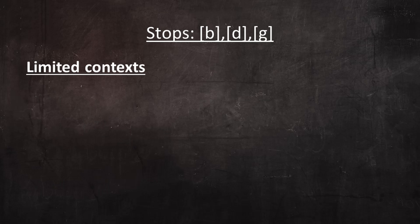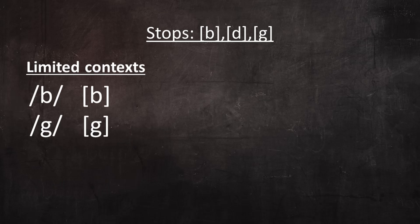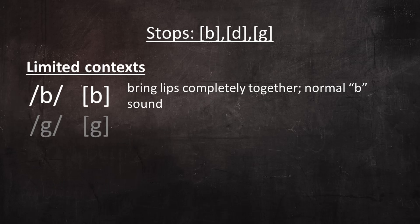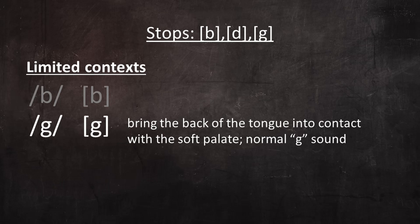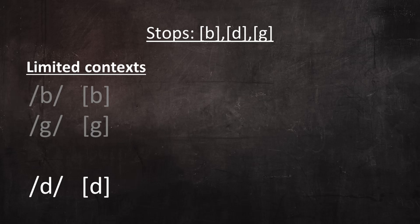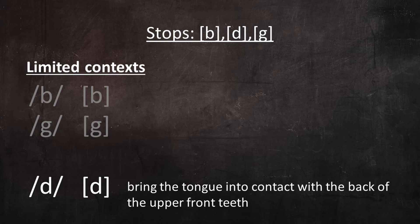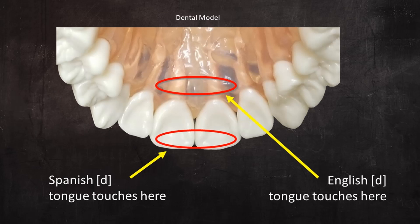Now in certain phonetic contexts, B, D, and G are pronounced more the way English speakers would expect them to be, especially B and G. Stop B is pronounced by bringing the lips completely together, and stop G is pronounced by bringing the back of the tongue into contact with the soft palate. But once again, Spanish D is a bit different from its English equivalent. The stop version of Spanish D is pronounced by bringing the tongue into contact with the back of the upper front teeth — different from English D, in which the tongue touches the gummy ridge above the upper front teeth, and it makes a different sound.